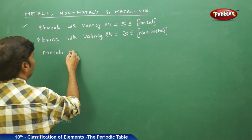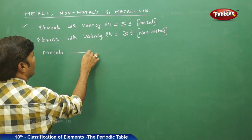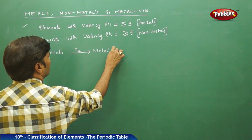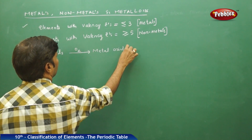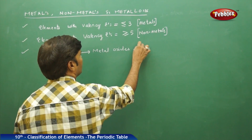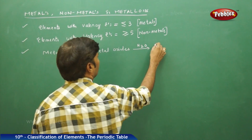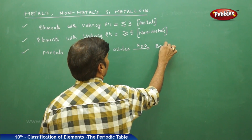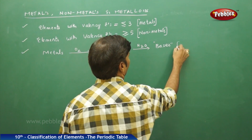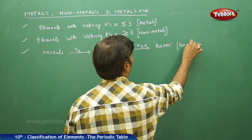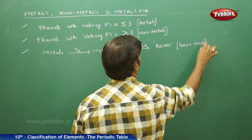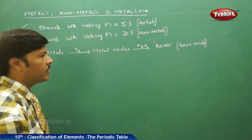Metals, when they interact with oxygen, they form metal oxides. These metal oxides upon hydrolysis give bases, hence they are basic in nature — they are basic oxides.